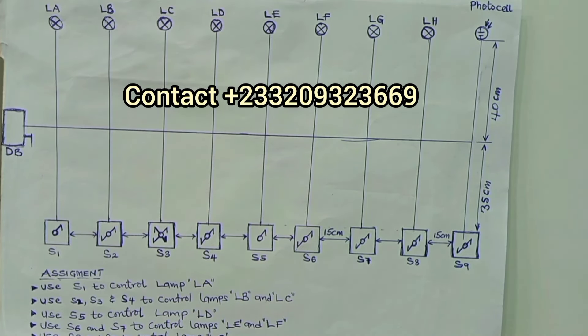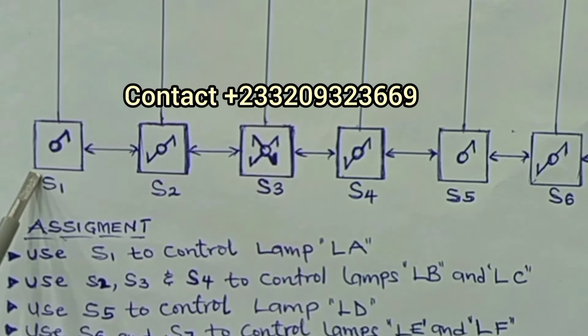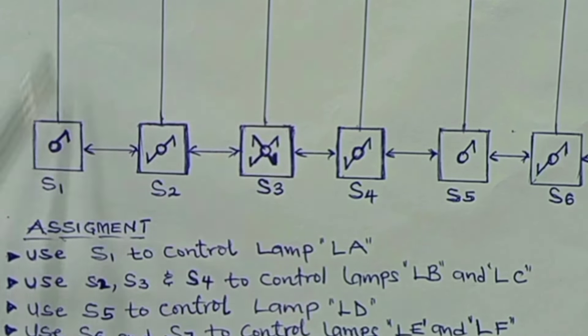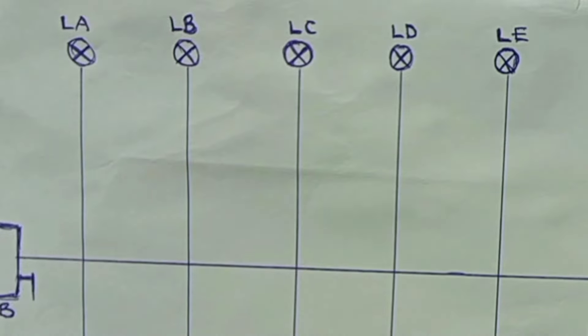So here, for example, in this drawing, you may be asked to use switch 1, which is here, to control lamp A. So in the wiring, you are using only this switch to control this lamp.